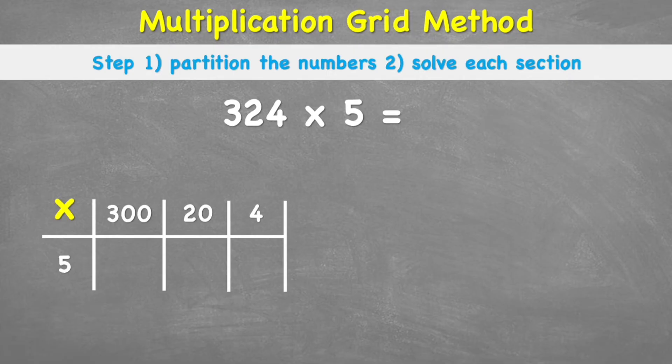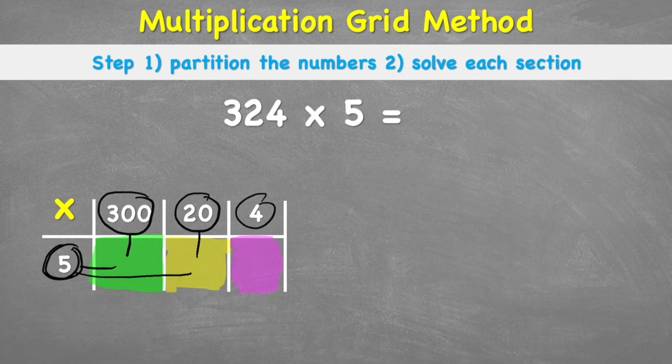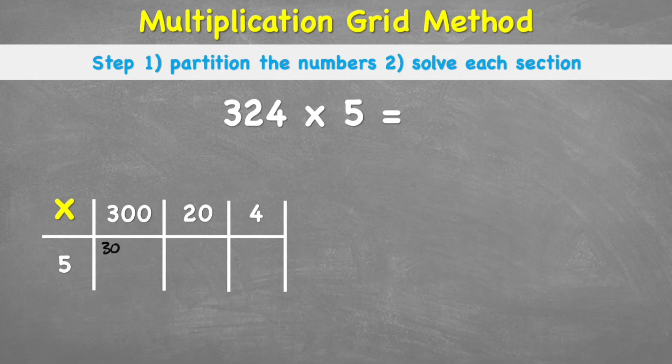We still need to understand how this grid worked. This square here is the result, the product of the multiplication of 300 times 5. This second square would be the product of 20 times 5. And this last one would be the product of 4 times 5. But that doesn't really help me yet, does it? Because this first question, I've got to do 300 times 5. Oh my gosh, that sounds horrible again. But there's a trick.